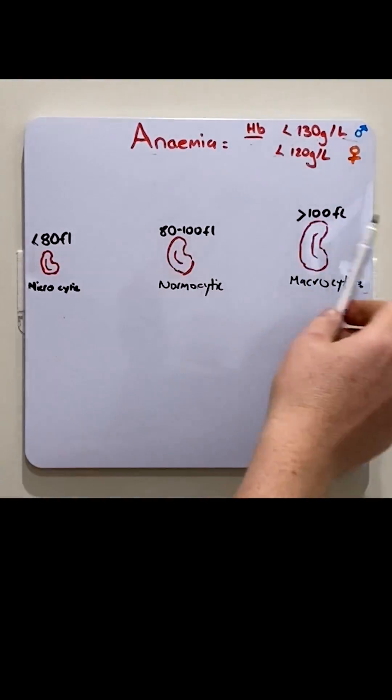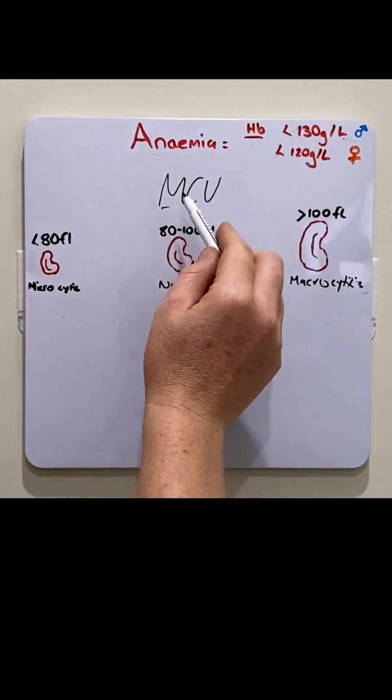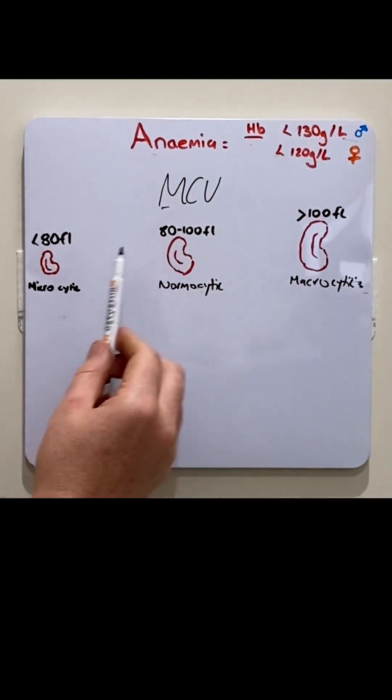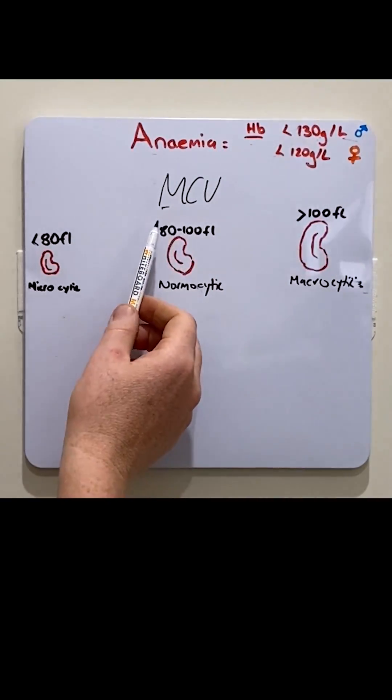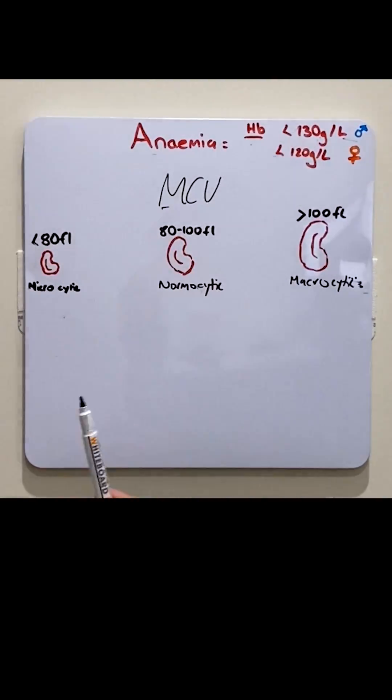A parameter used to classify different types of anemia is the MCV, or mean corpuscular volume, which is essentially the size of the red blood cell. This can be calculated by dividing the hematocrit by the total amount of red blood cells per liter.